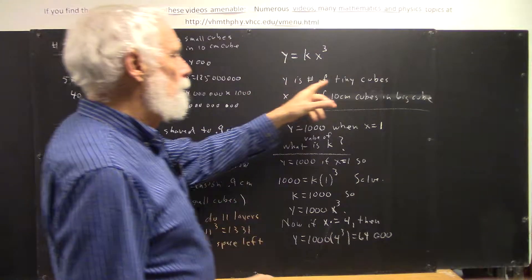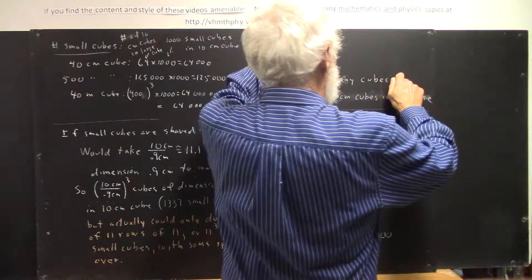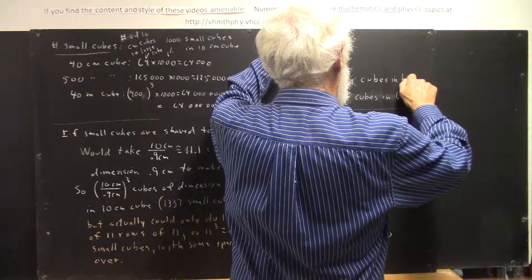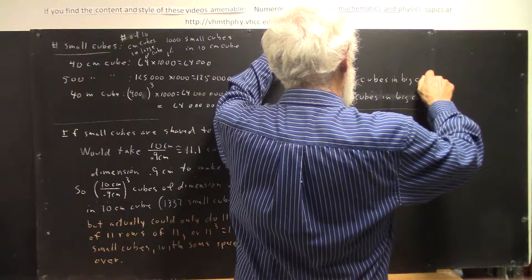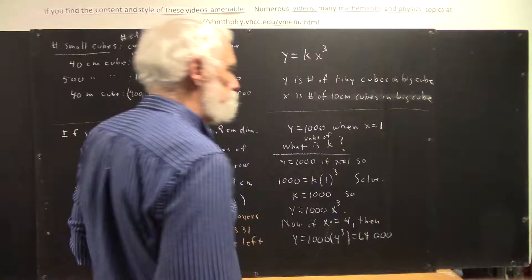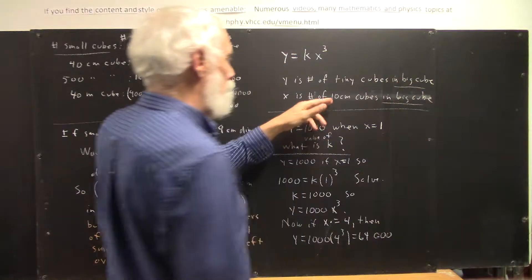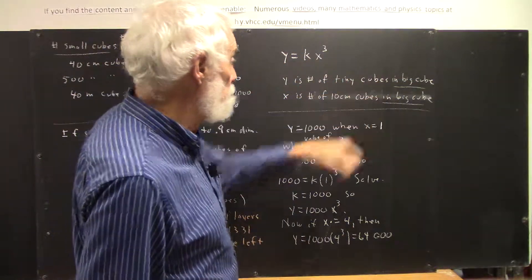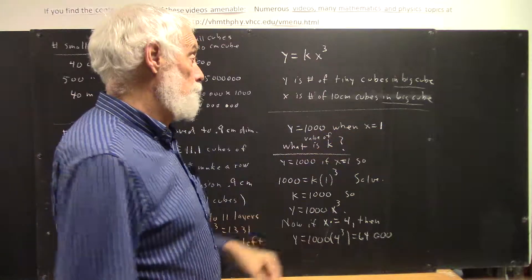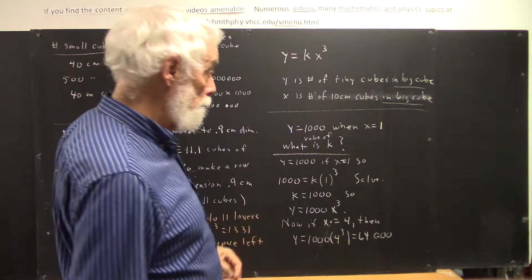Now I say, y is the number of tiny cubes in a big cube, so this 'in big cube' was thought to apply to both of these, but let's be explicit about that again, along the lines of saving Western civilization.